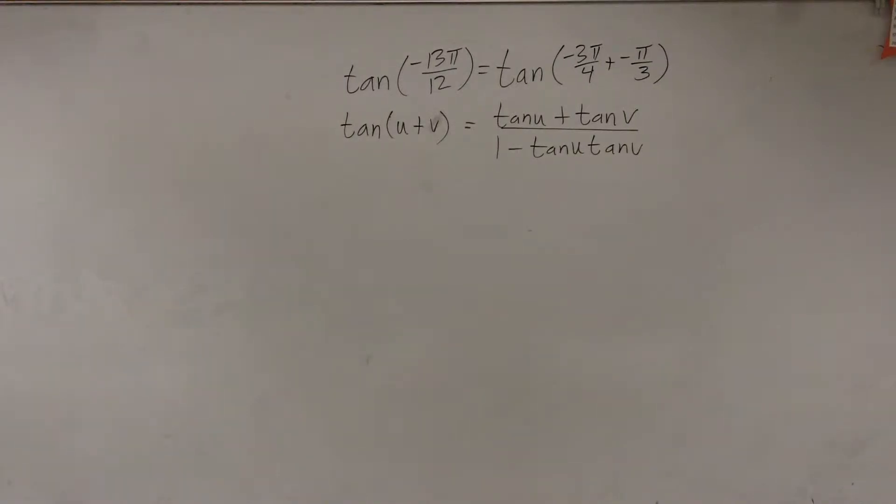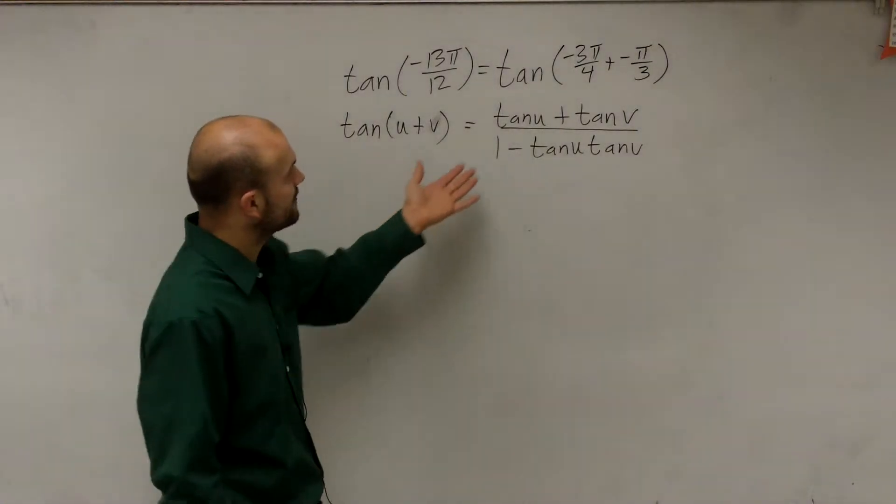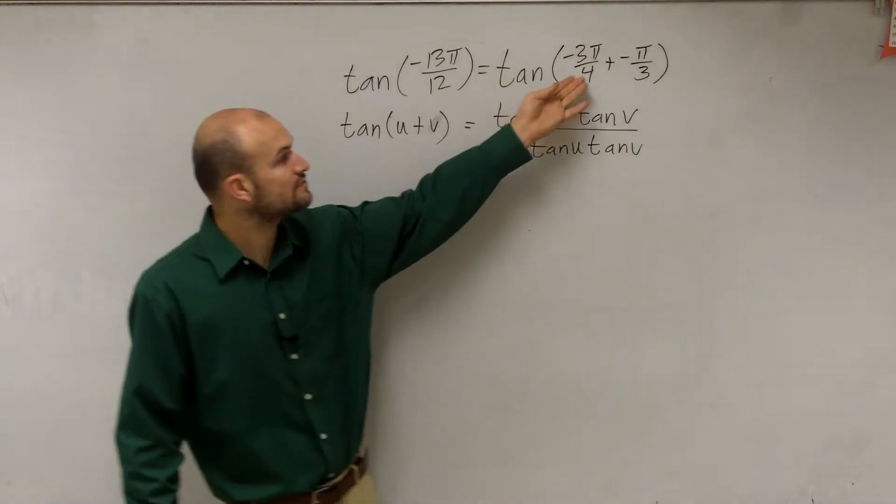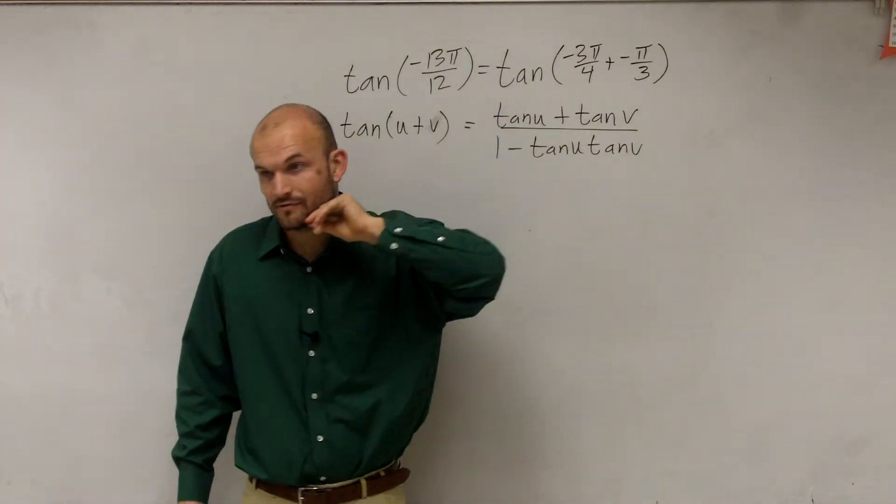We have the tangent of negative 13π over 12, and I broke that down into the addition of two angles: negative 3π over 4 and negative π over 3.